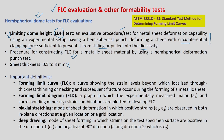Before we proceed, here are some important definitions. The forming limit curve, or FLC, is a curve showing the strain levels beyond which localized necking or localized through-thickness thinning — which is nothing but necking, i.e., epsilon 3 — and subsequent fracture occur during the forming of a metallic sheet. Epsilon 3 is very important; it should not go beyond a particular limit, otherwise necking will happen.